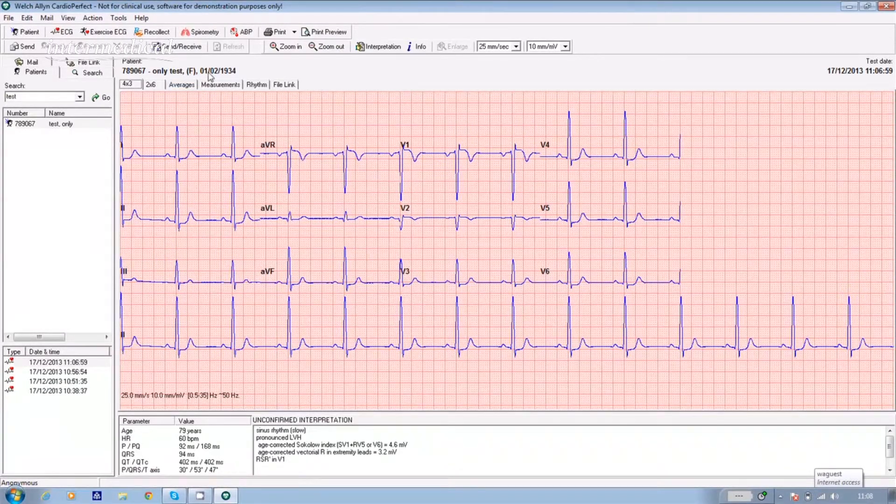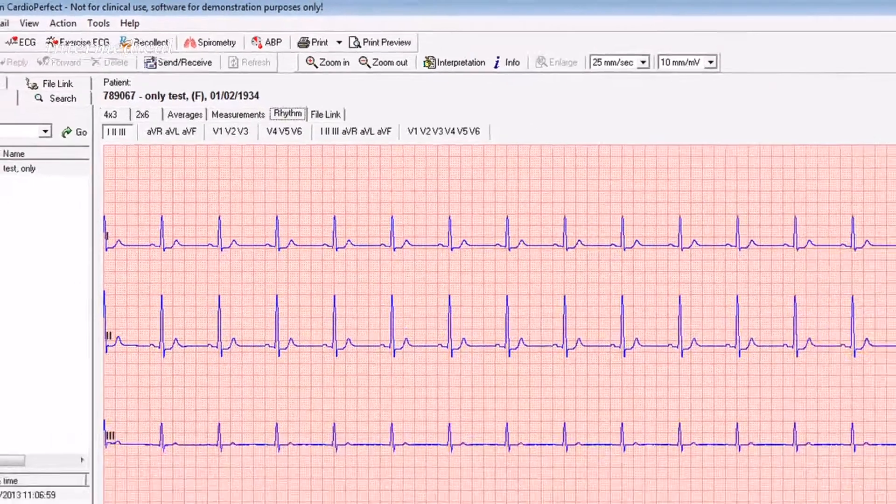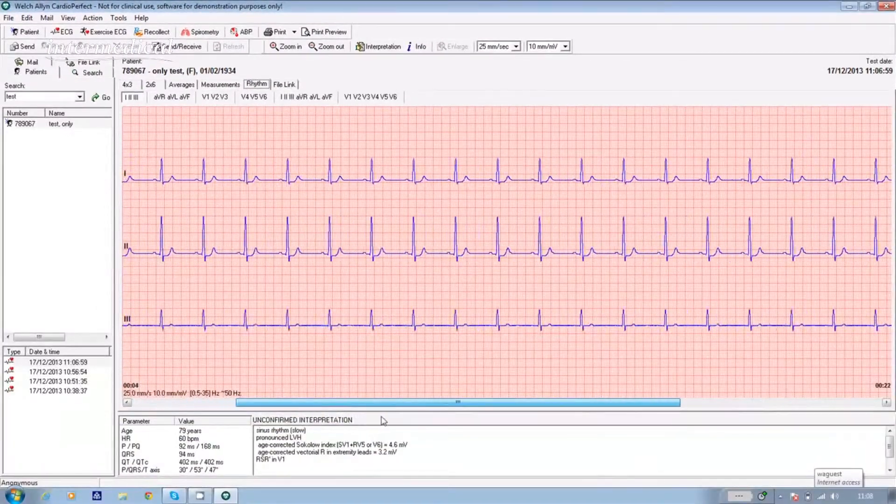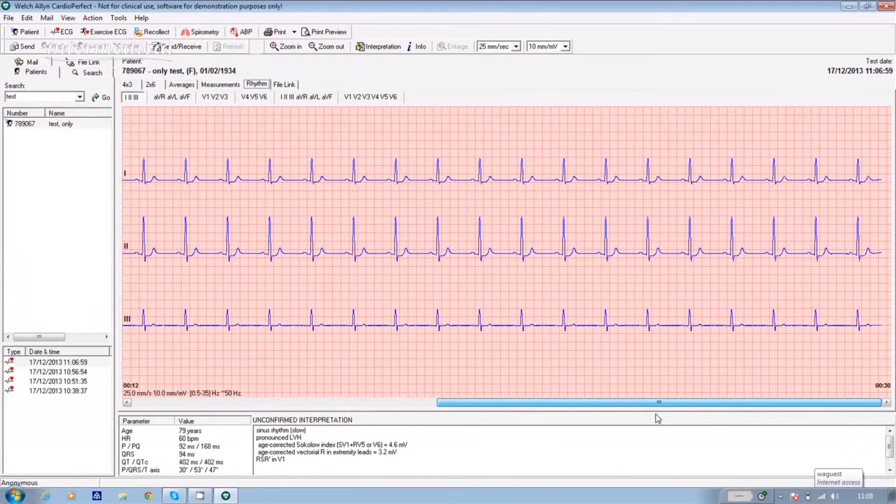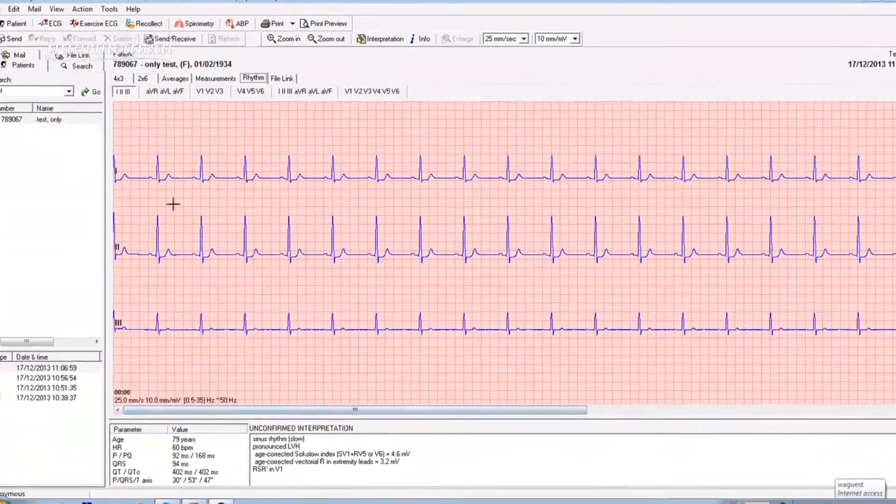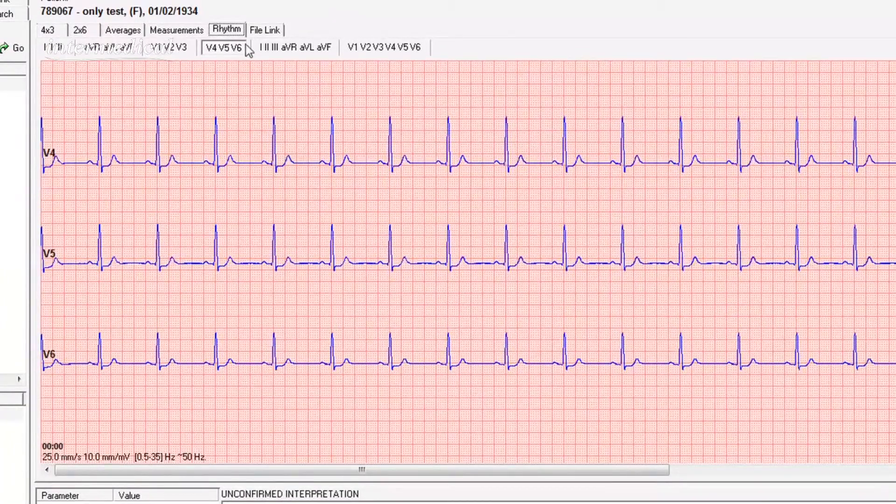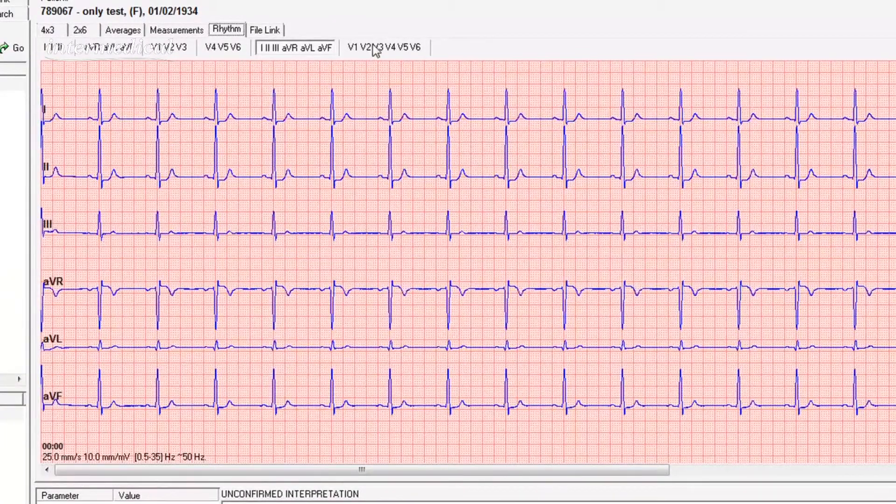Now to look at rhythm ECGs, go back into your software, open your test in the same way, click on the rhythm tab above the ECG and use the slider bar to take you through the whole test. You can do this in four groups of three leads or two groups of six.